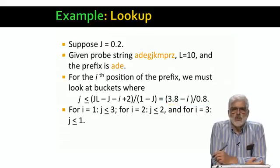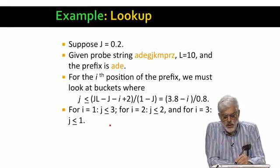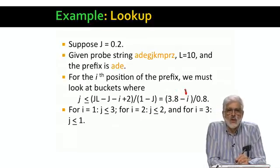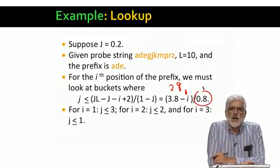Remember, J has to be an integer. So for i equals 1, we get 3.8 minus 1 or 2.8 divided by 0.8, that's 3.5, so J is equal to or less than 3.